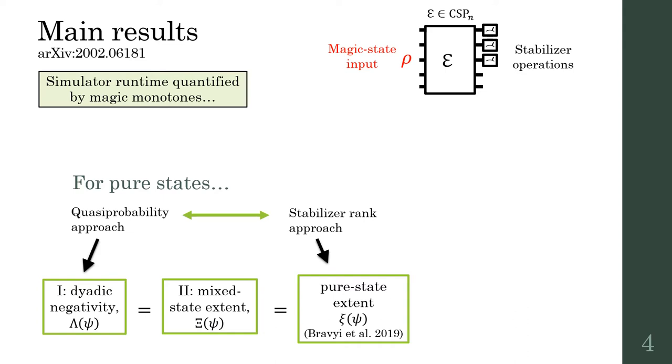Mixed state extent is lower bounded by dyadic negativity, but we show that equality holds in certain important cases.